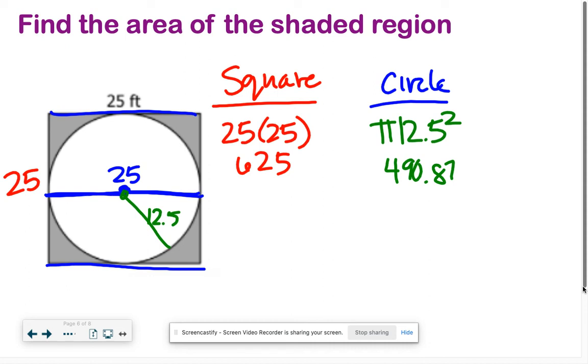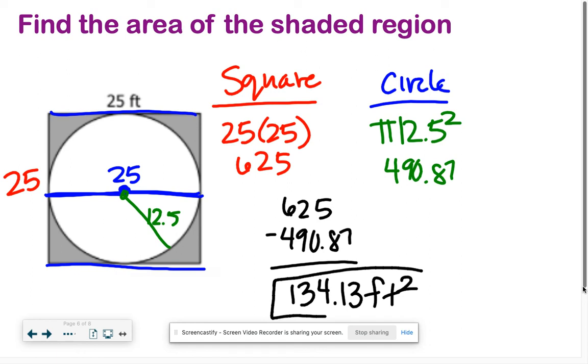Now we just subtract away. We just want the shaded part, so we're going to take our square, subtract away our circle, to get about 134.13 feet squared.